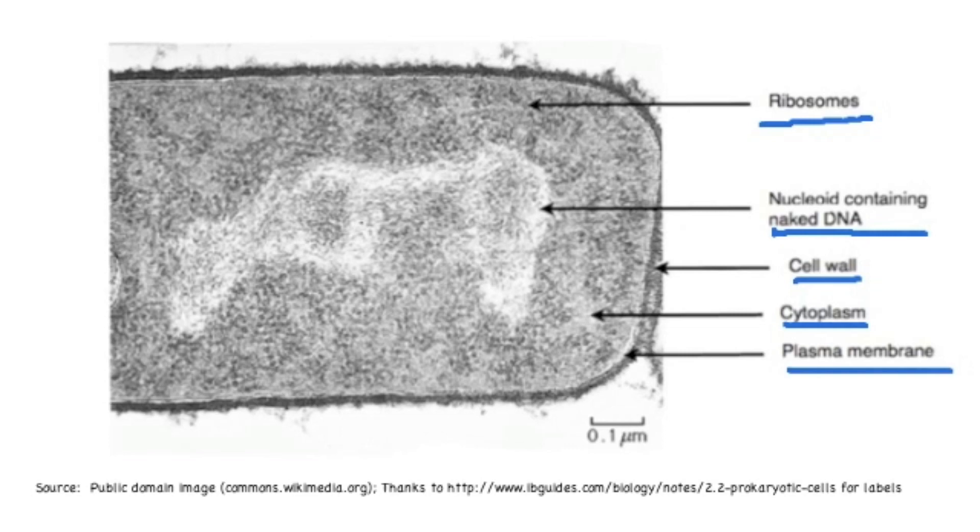And lastly on this image, you have the plasma membrane, which is going to be another boundary or line, but it's going to be found on the inside of the cell wall, so not to be confused with the cell wall label.